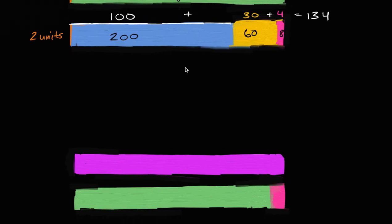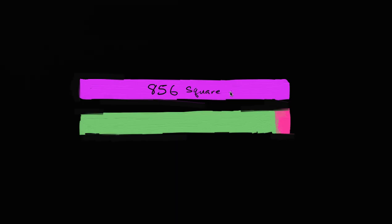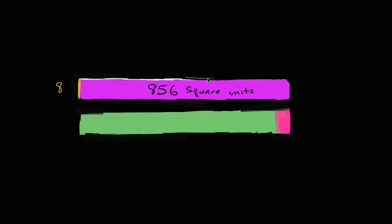Now, that's just one way to do it, where you take each of the place values and break up your field or your rectangle. But you could do it other ways — you don't always have to break it up that much. For example, let's say that this area is 856 square units, and let's say that this dimension right over here is eight units. So how could we break this up so it's easier to think about what the other dimension would be? That length is going to be 856 divided by eight.